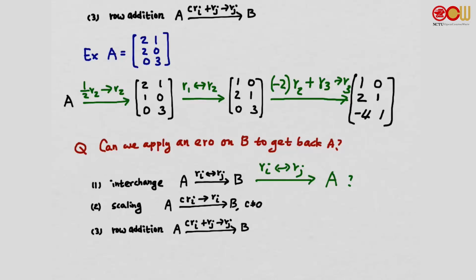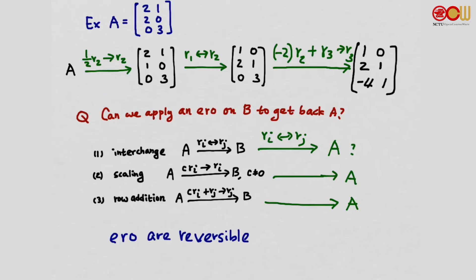For the other two types, I will leave them as exercises — what ERO can we apply to matrix B to get back A? There is indeed an ERO that does this. This shows that EROs are reversible: when we apply an ERO on A to get B, we can always apply another ERO on B to get back A.